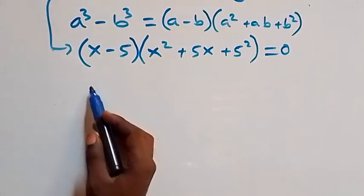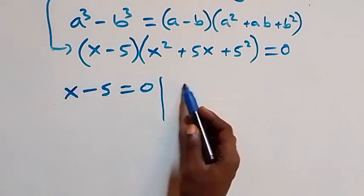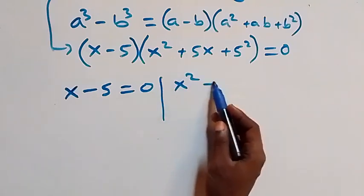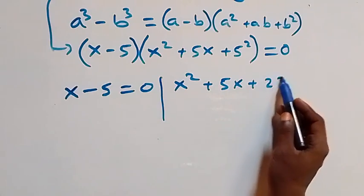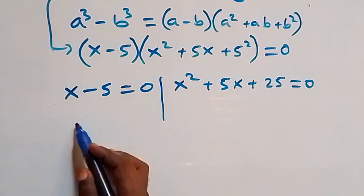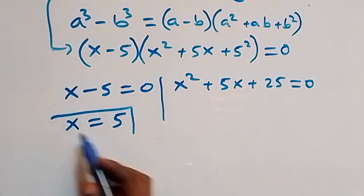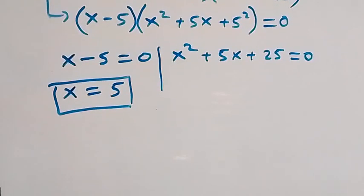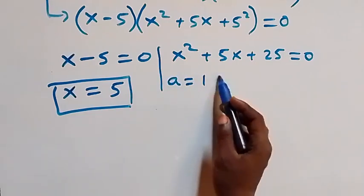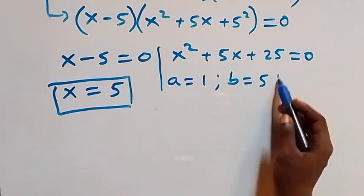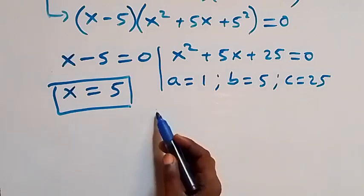From this second case we also have two sub-cases: x minus 5 equals zero, giving the real solution x equals 5. The other factor gives the quadratic x squared plus 5x plus 25 equals zero, where a equals 1, b equals 5, and c equals 25. We apply the quadratic formula again.